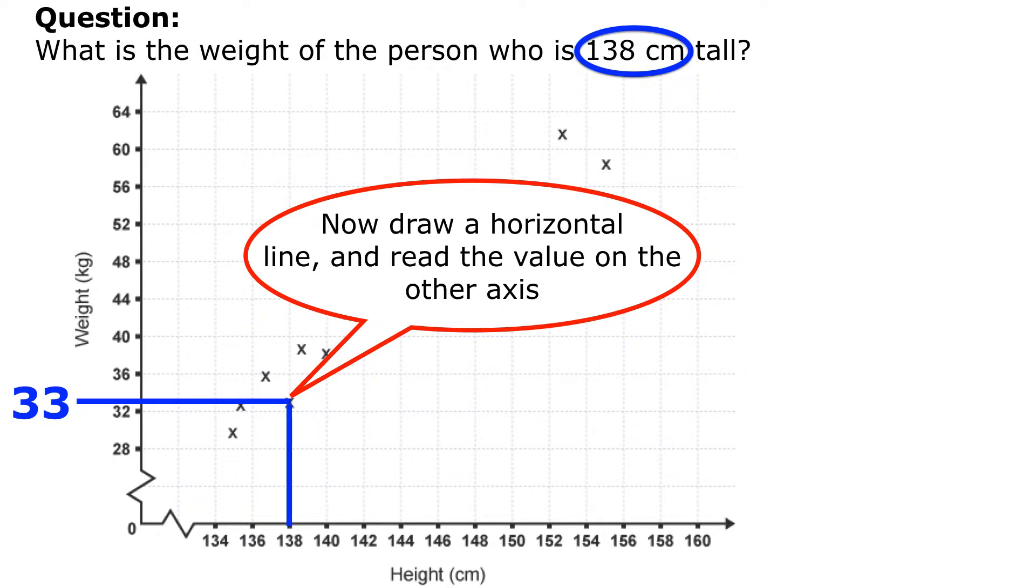Okay, so we're never going to be completely exact when we read off a graph and that's okay, we expect that. So now I just need to write up that answer, so I will say that the person who's 138 centimeters tall weighs approximately 33 kilograms. And notice how I use that word approximately in there.